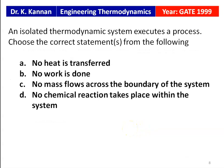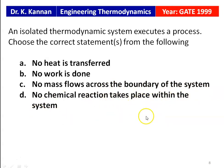Next question from GATE 1999: An isolated thermodynamic system executes a process. For an isolated system, there is no mass transfer and no energy transfer. So the first three statements are correct: there is no heat transfer, there is no work done, and there is no mass flow across the boundary of the system.